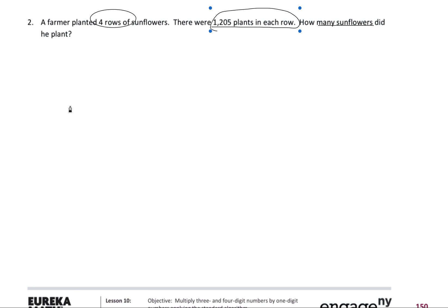So I'm going to get right into my area model. I'm going to have my four, which I'm going to be multiplying by 1,205.